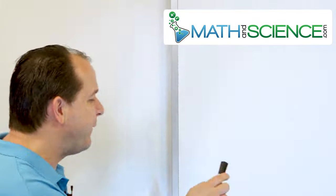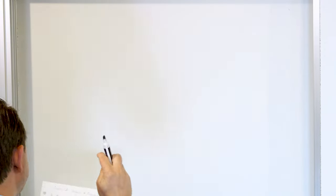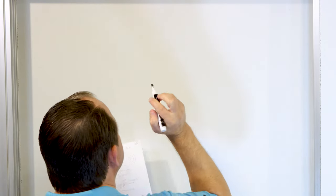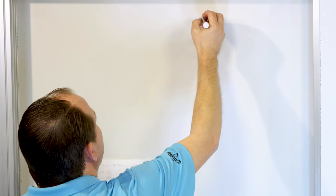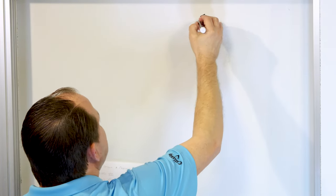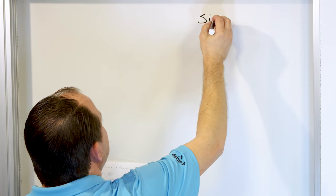Now we have two more — the secant and the cosecant functions. They're not difficult to understand. We are going to do a computer demo to show you what those graphs look like, so stick with me. But before we jump into the computer demo, I want to remind you of something, and that is what I call the trig rainbow.